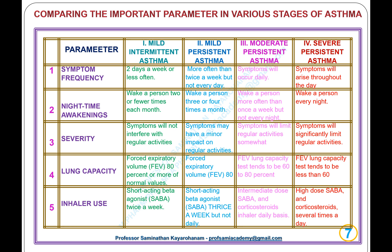Stage 4, severe persistent asthma: symptoms arise throughout the day; nighttime awakenings every night; symptoms significantly limit regular activities; FEV less than 60%; high-dose SABA and corticosteroids used several times a day.